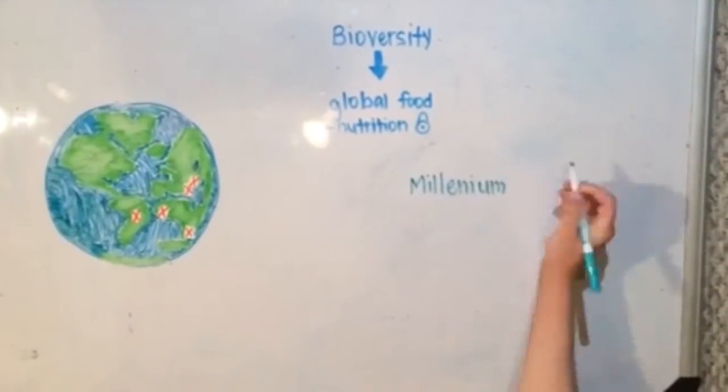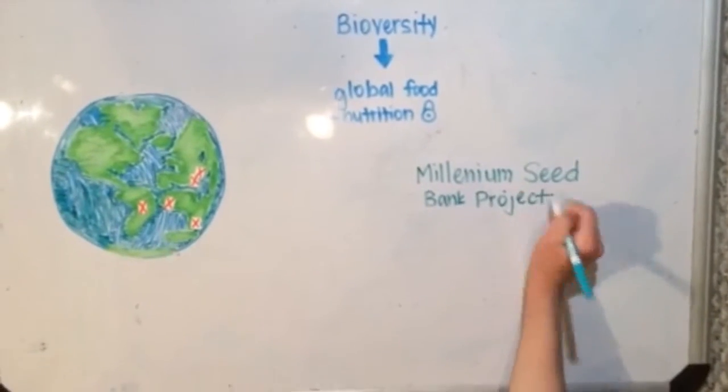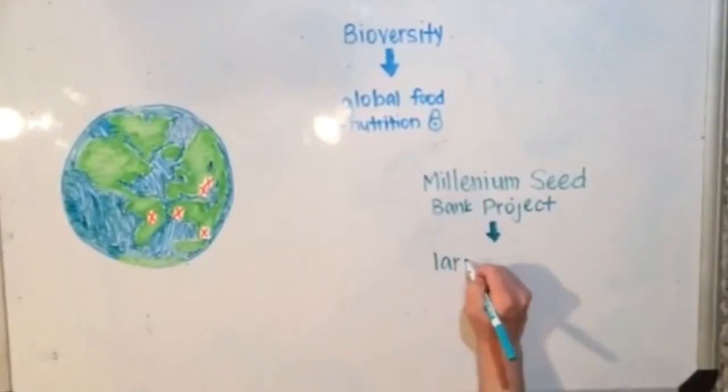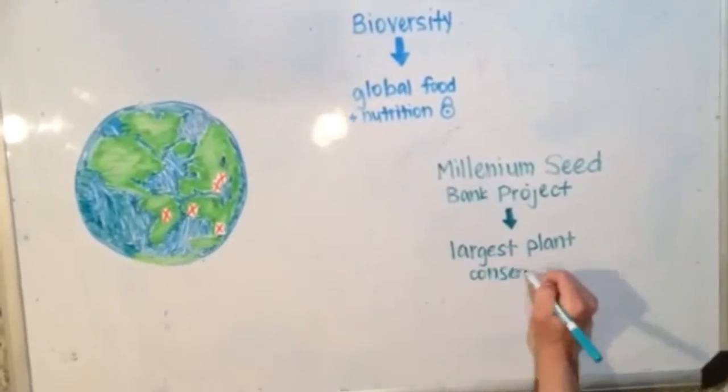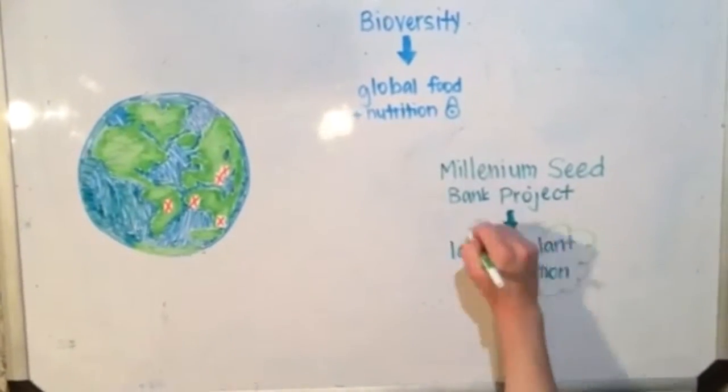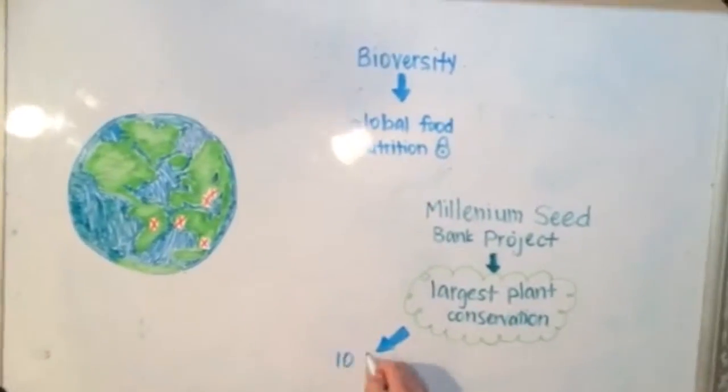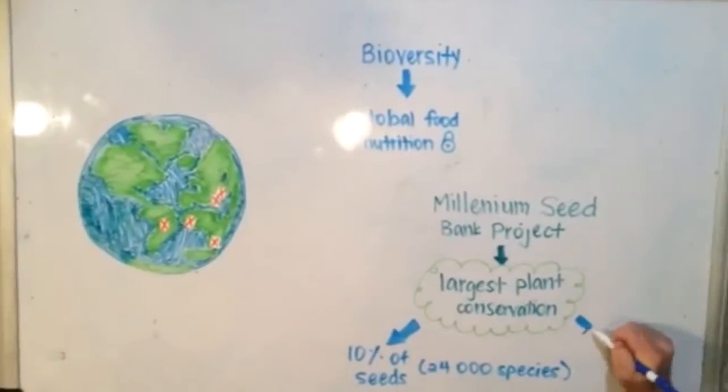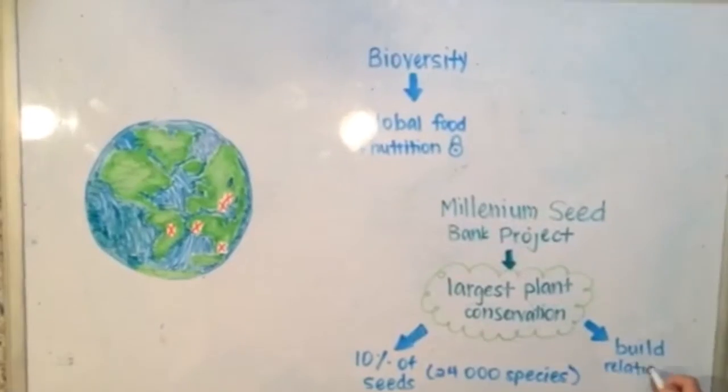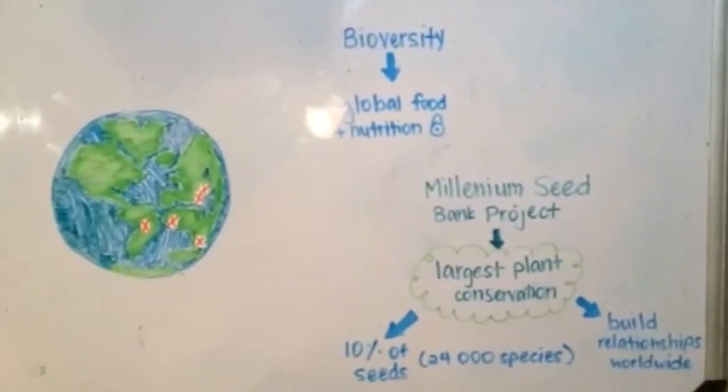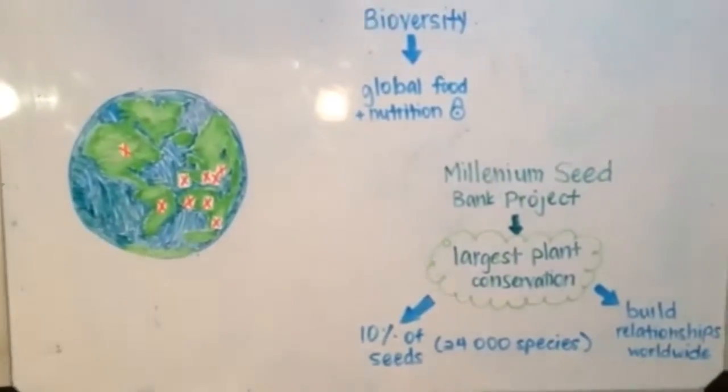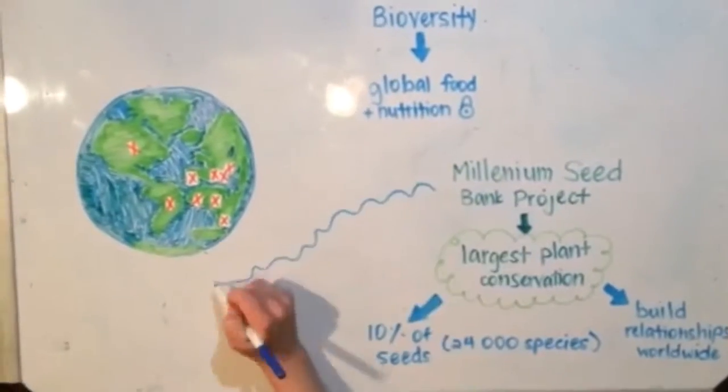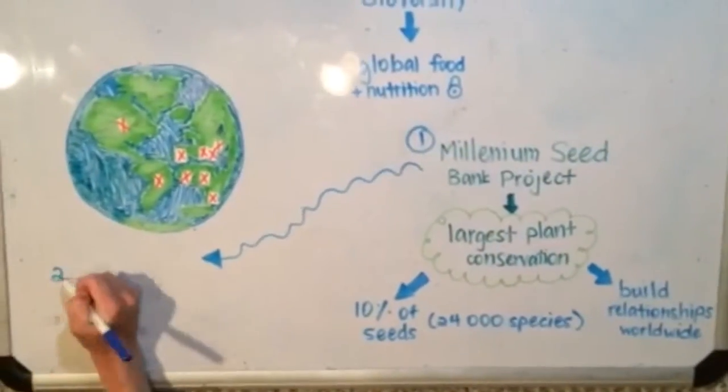The Millennium Seed Bank Project is the largest plant conservation program in the world. They are responsible for the collection and conservation of 10% of the world's seed-bearing flora, which totals to about 24,000 species. The MSBP focuses on building relationships worldwide to support and advance seed conservation efforts. They are active in Africa, Eurasia, Asia, Europe, and North America.